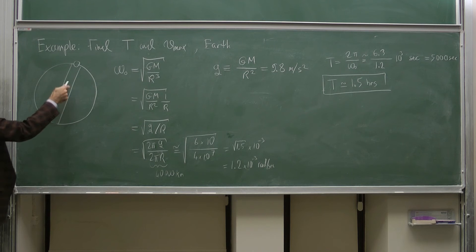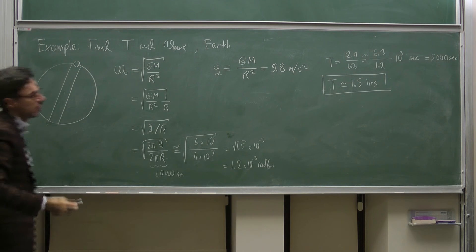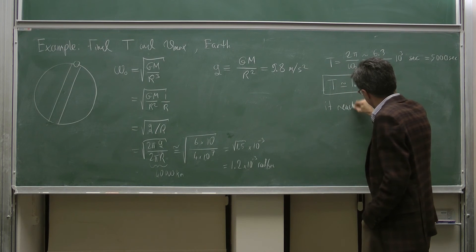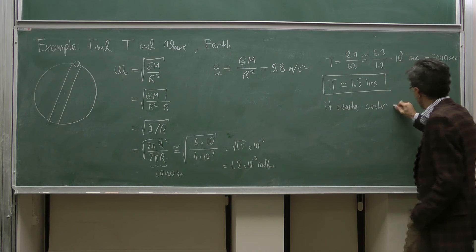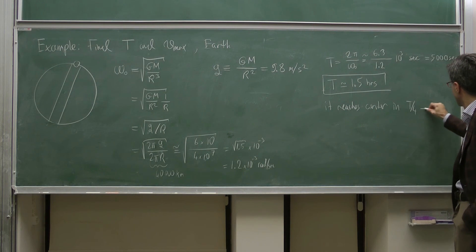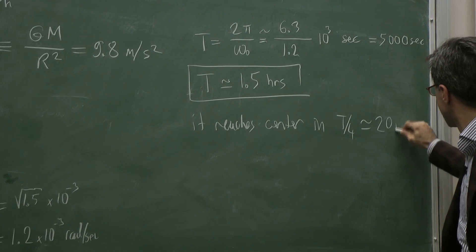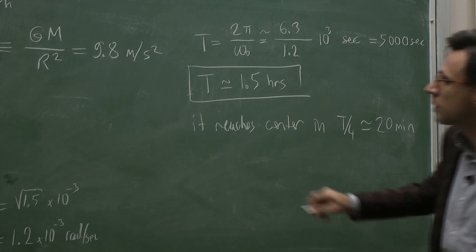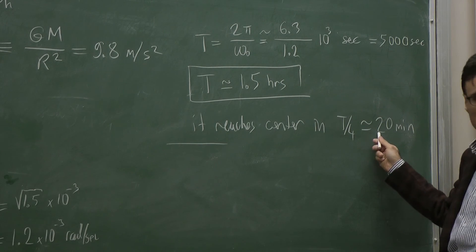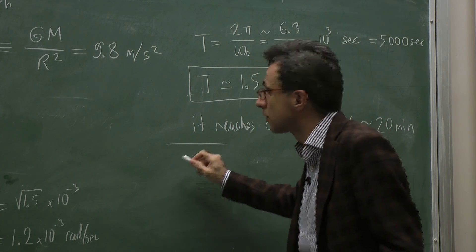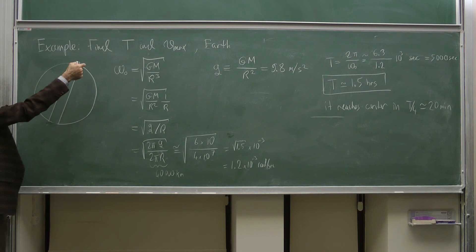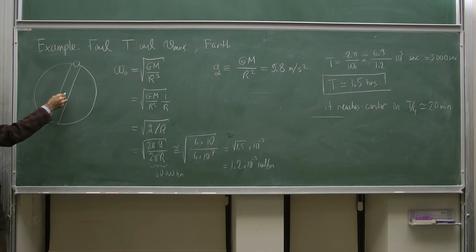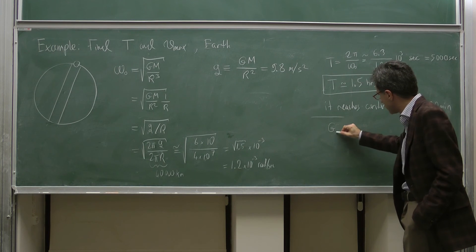In order to reach the center, it takes one quarter of the period — T over 4 — which is approximately 20 to 25 minutes. Now for the maximum velocity: we release the object from rest at the surface, where kinetic energy is zero and potential energy is maximum. At the center, kinetic energy is maximum and potential energy is zero due to symmetry.